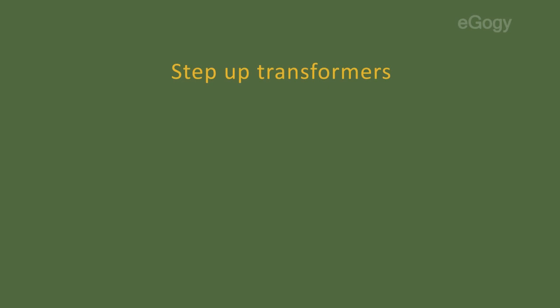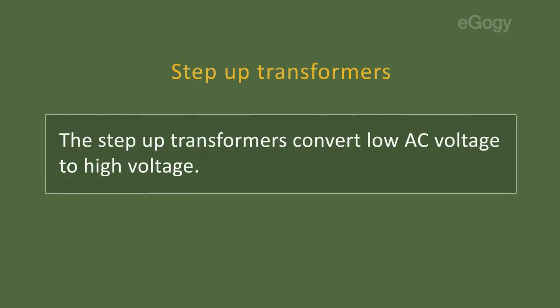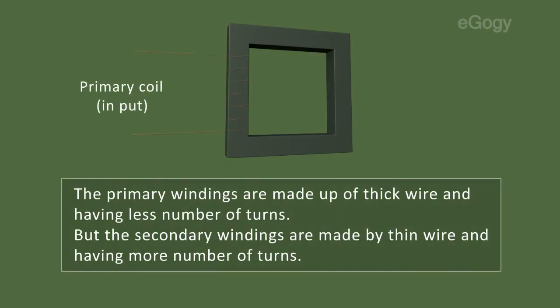Step-up transformers convert low AC voltage to high voltage. In this, the primary windings are made up of thick wire and having less number of turns. But the secondary windings are made of thin wire and having more number of turns.